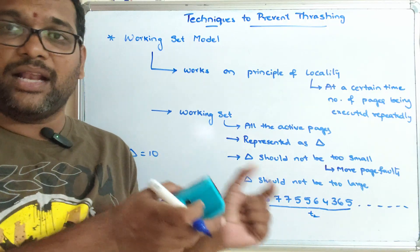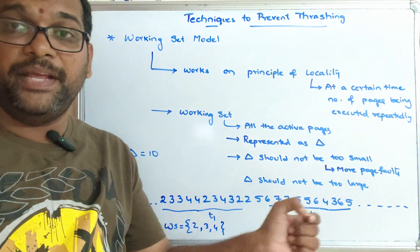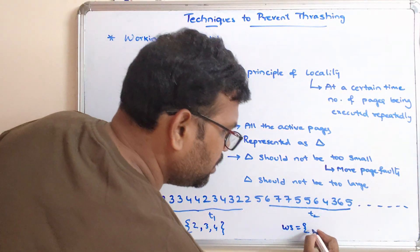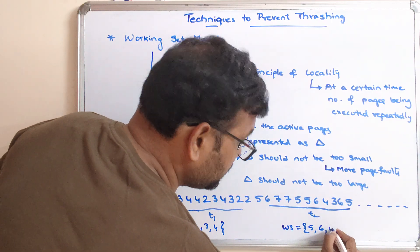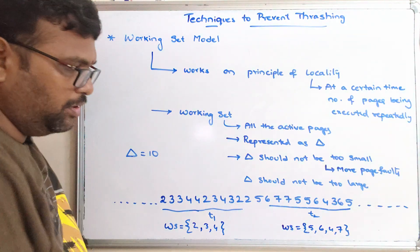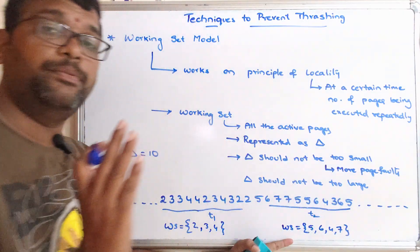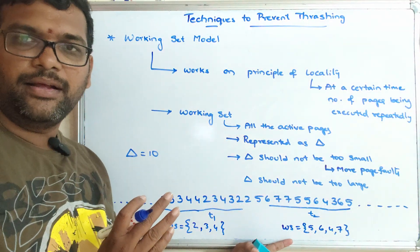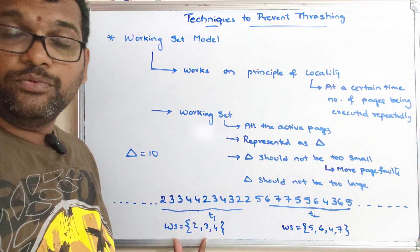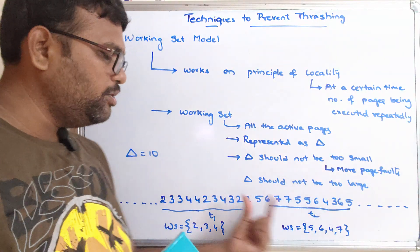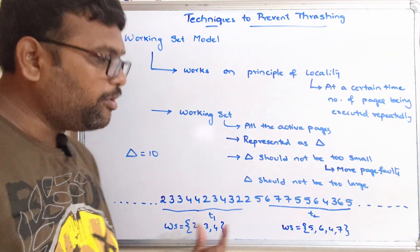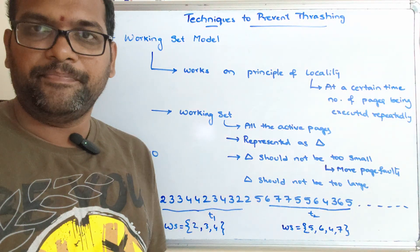For the next time period, considering the last 10 pages executed, the active pages are 4, 5, 6, and 7 — so four frames are allocated. The working set keeps updating over time: if pages are no longer active, they are removed from the working set, and frames are allocated only for active pages.